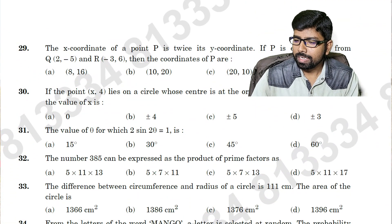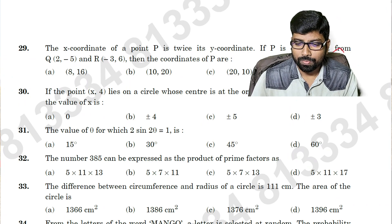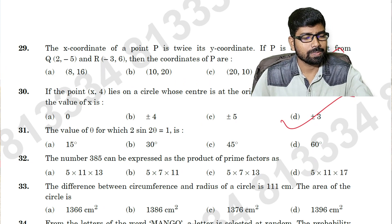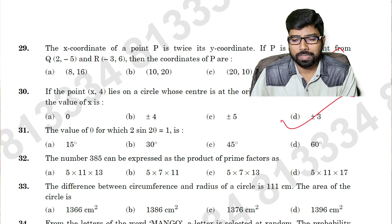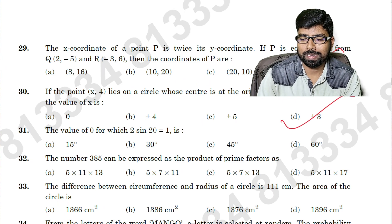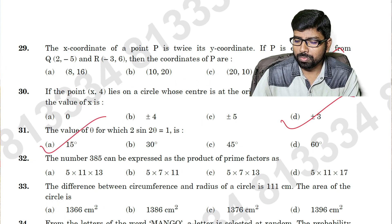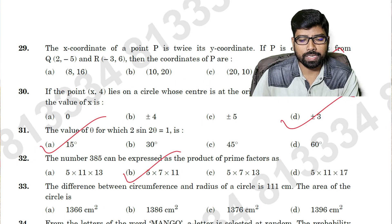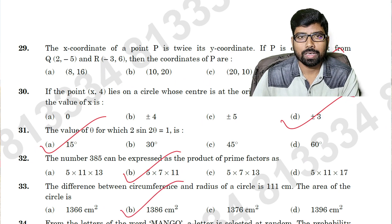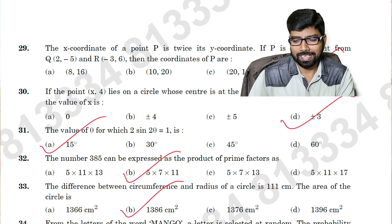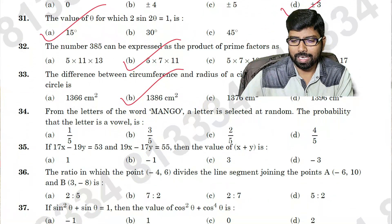Question number twenty-nine: option D. Question number thirty: option D. Question number thirty-one: option A. Question number thirty-two: option B. Question number thirty-three: also option B. I think all of you can get the answer.